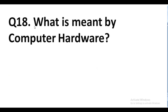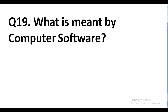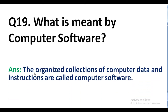Question number 18. What is meant by computer hardware? Answer. The physical parts of the computer that you can touch and feel are known as computer hardware. Question number 19. What is meant by computer software? Answer. The organized collections of computer data and instructions are called computer software.